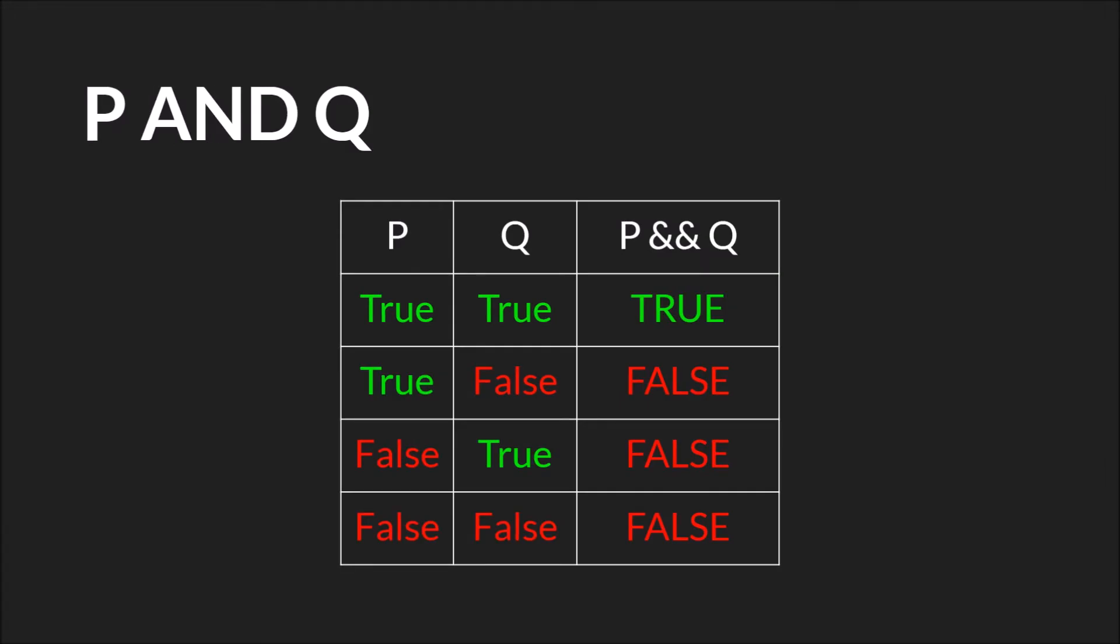Next, we have the AND operator. So now we need two values, P and Q. And here we have every combination of those two values: true true, true false, false true, and false false. P and Q is true only if both are true. So when you say P and Q, you're asking, are both P and Q true? They evaluate to true here. Every other combination will be false.